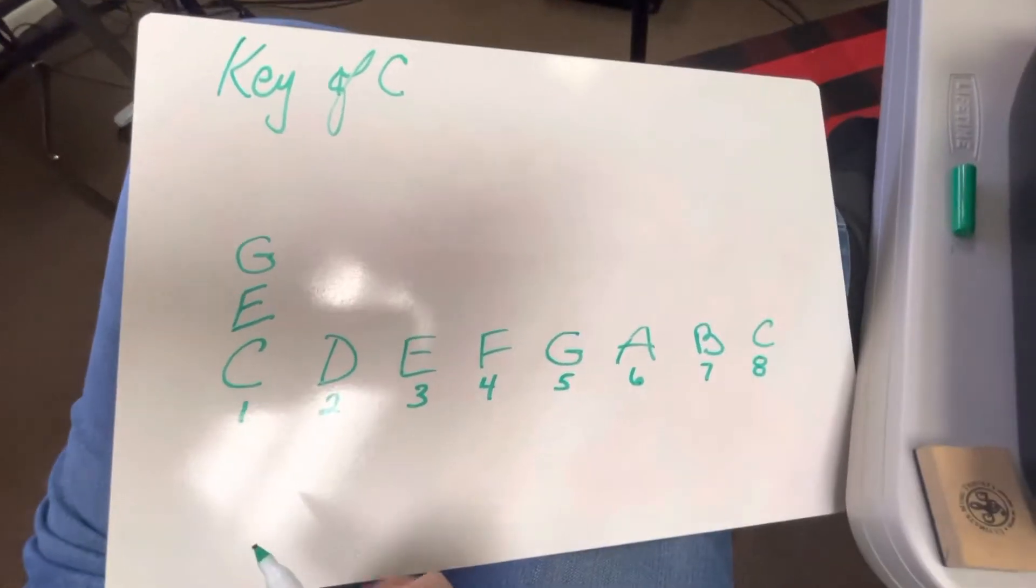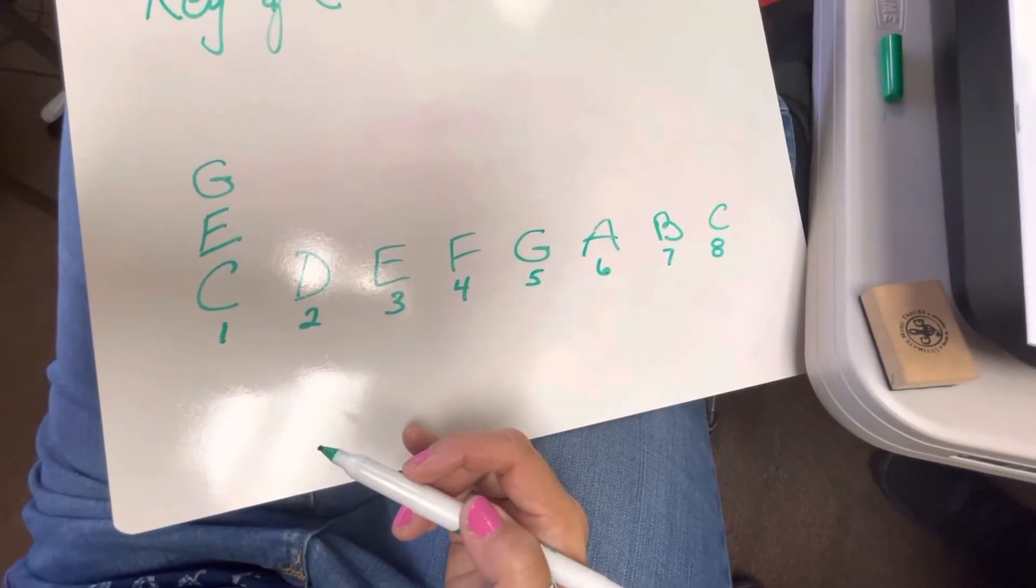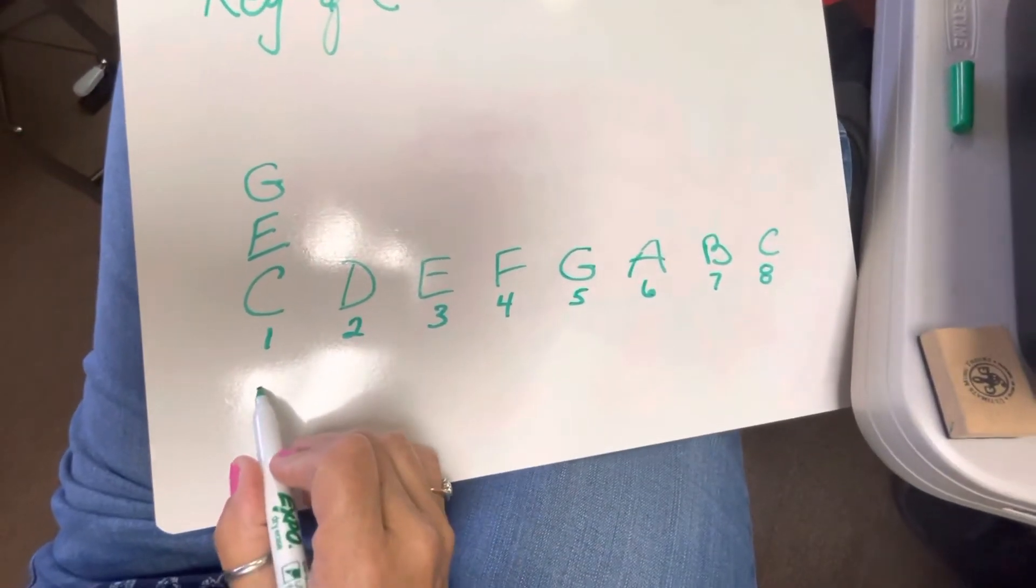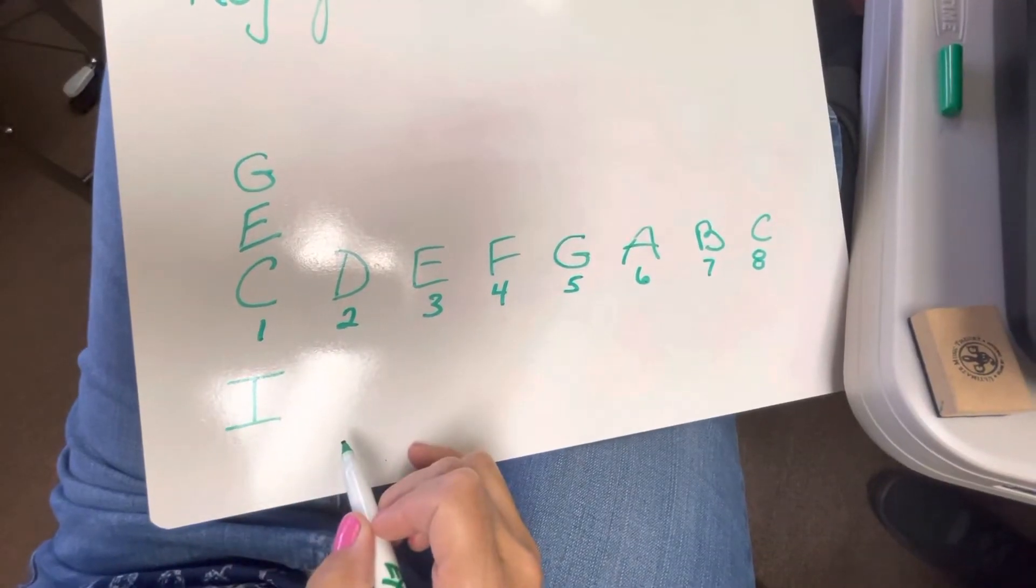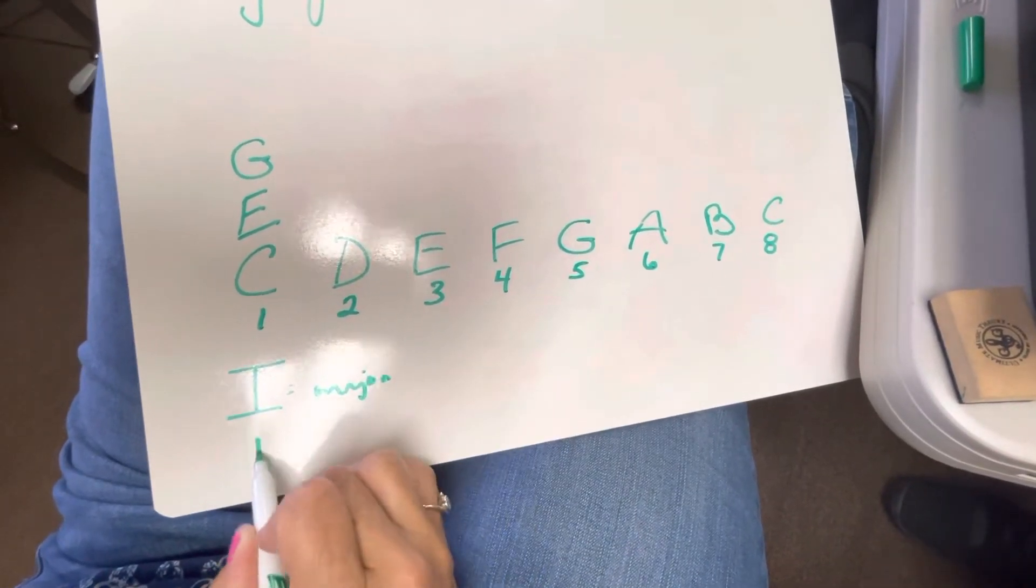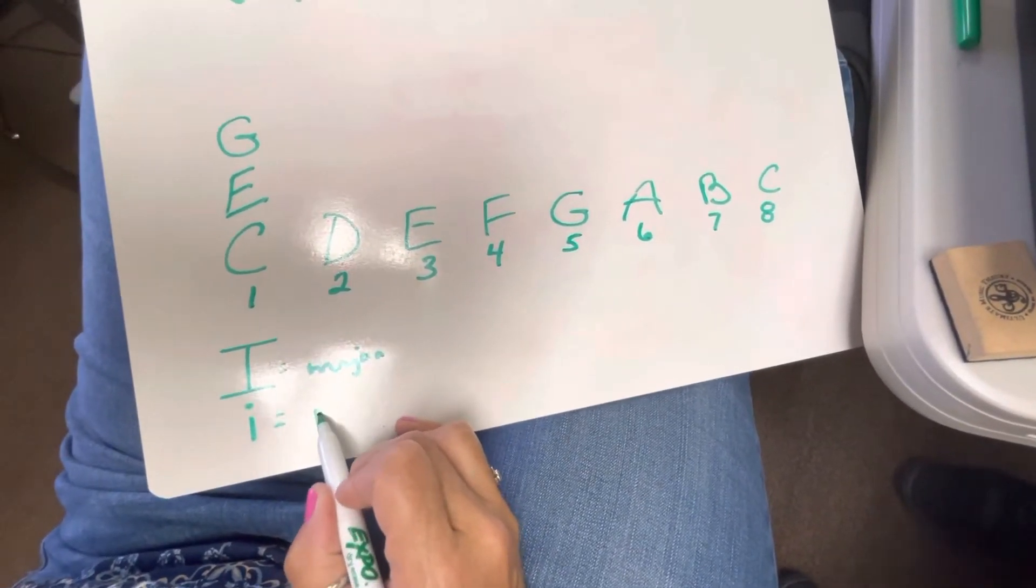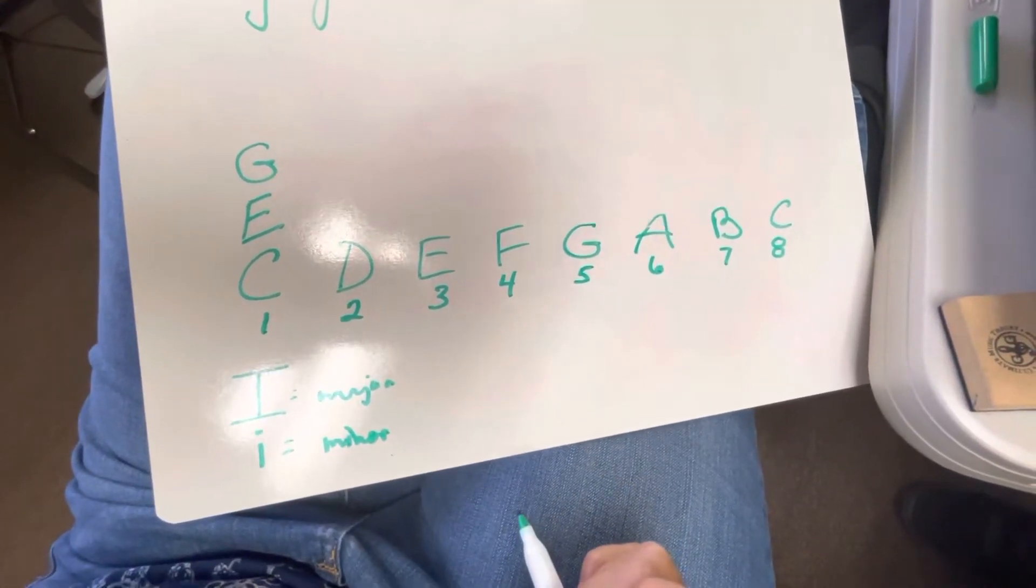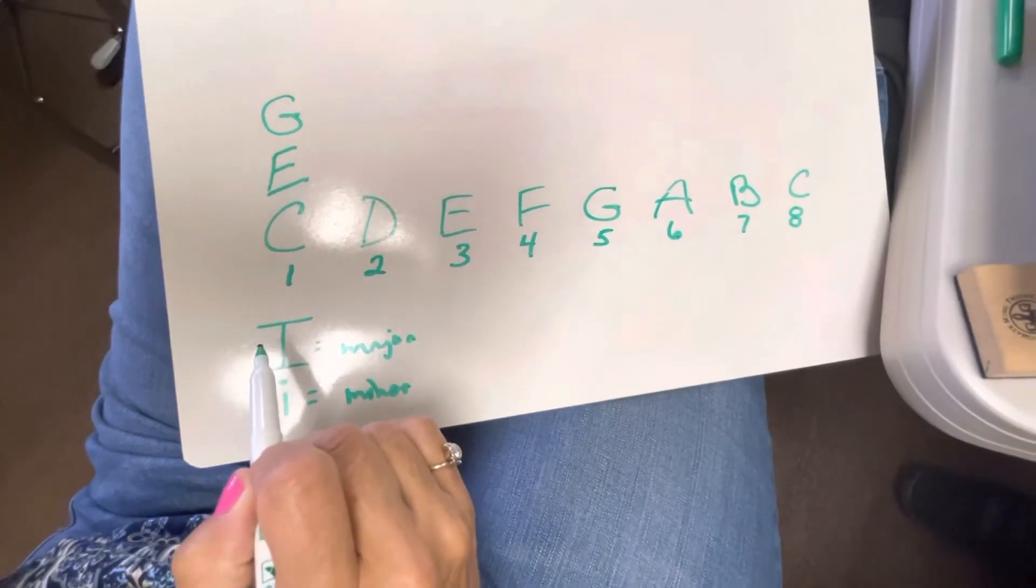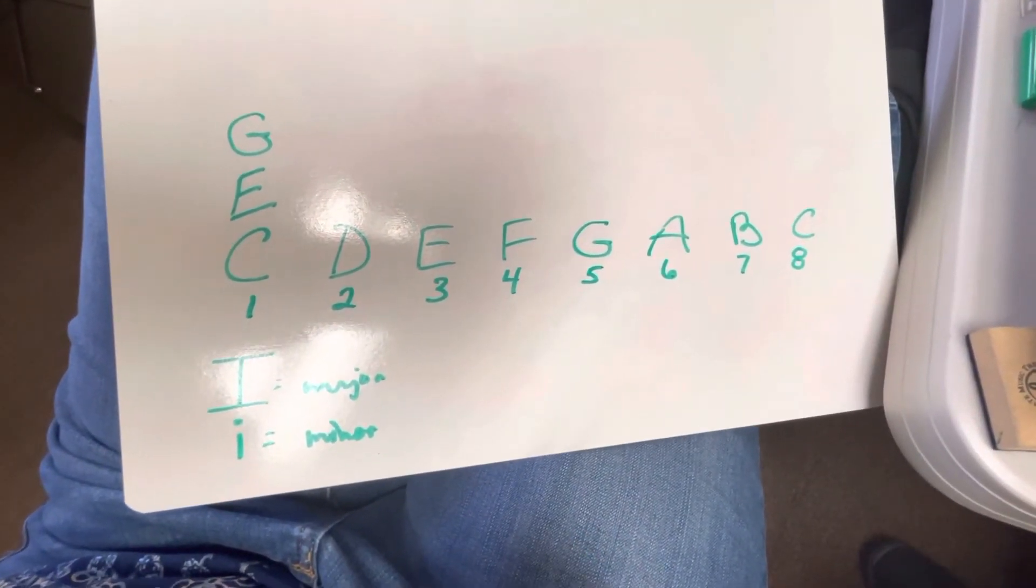So happy means we're going to write Roman numerals. Happy and sad are written in Roman numerals in music differently than in math. So don't think math, which is a good thing. If we have a major chord, we will write a capital Roman numeral. If we have a minor sad chord, we write a lowercase Roman numeral. So C is major, right? Because it was happy. So we're going to make this one into a capital Roman numeral one. Can you write that on your paper?